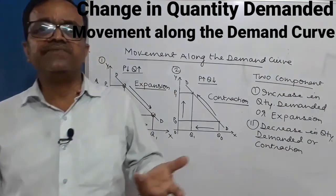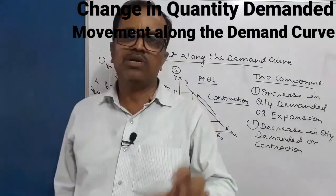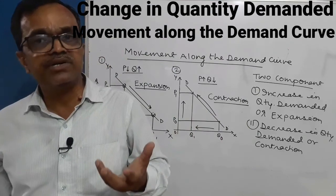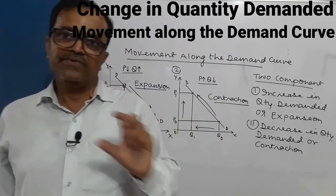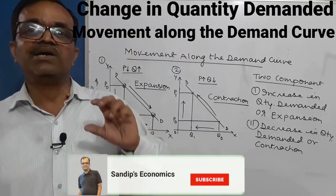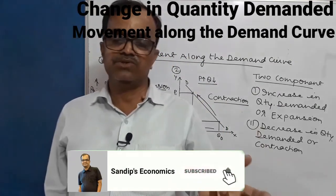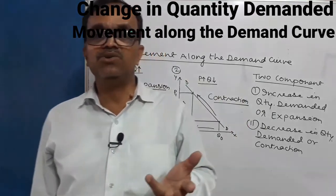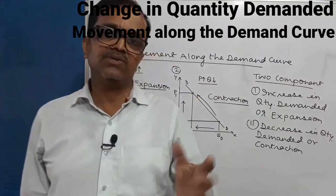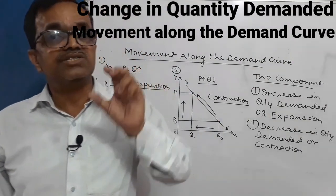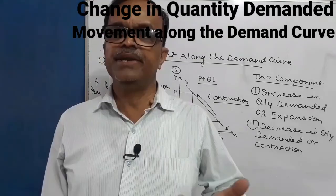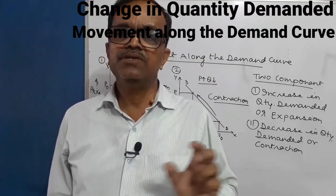That's all about the effect of changes in price on the quantity demanded of a commodity, which is called change in quantity demanded. Thank you very much for watching. If you like this video, please share it and subscribe to my channel. In the next video, I will cover the effect of changes in factors other than price on the quantity demanded, which is termed as change in demand or shift in demand curve. Till then, keep watching. Thank you very much.